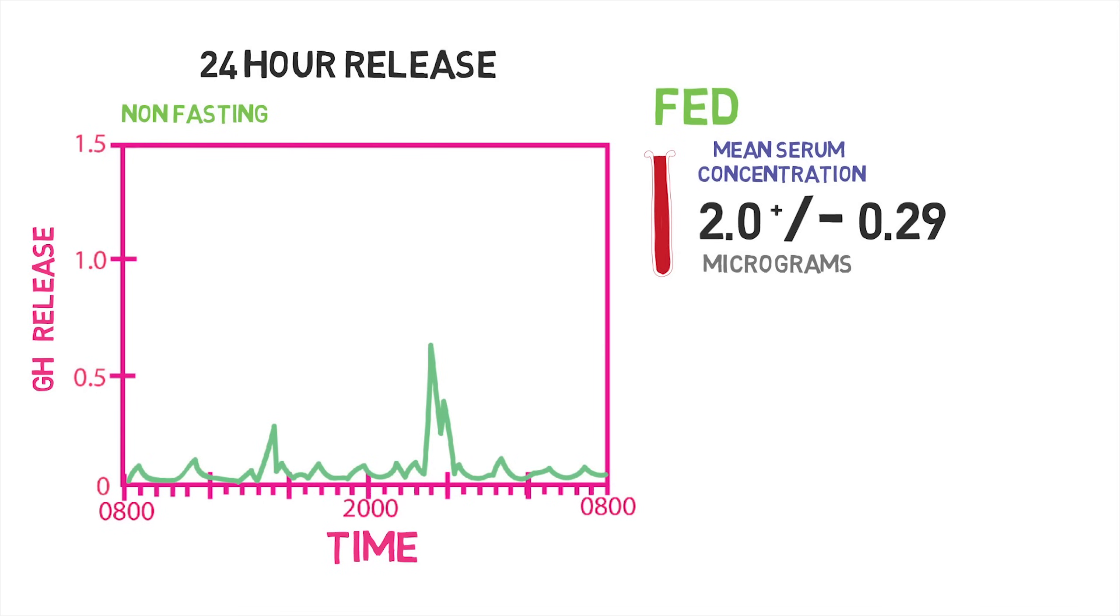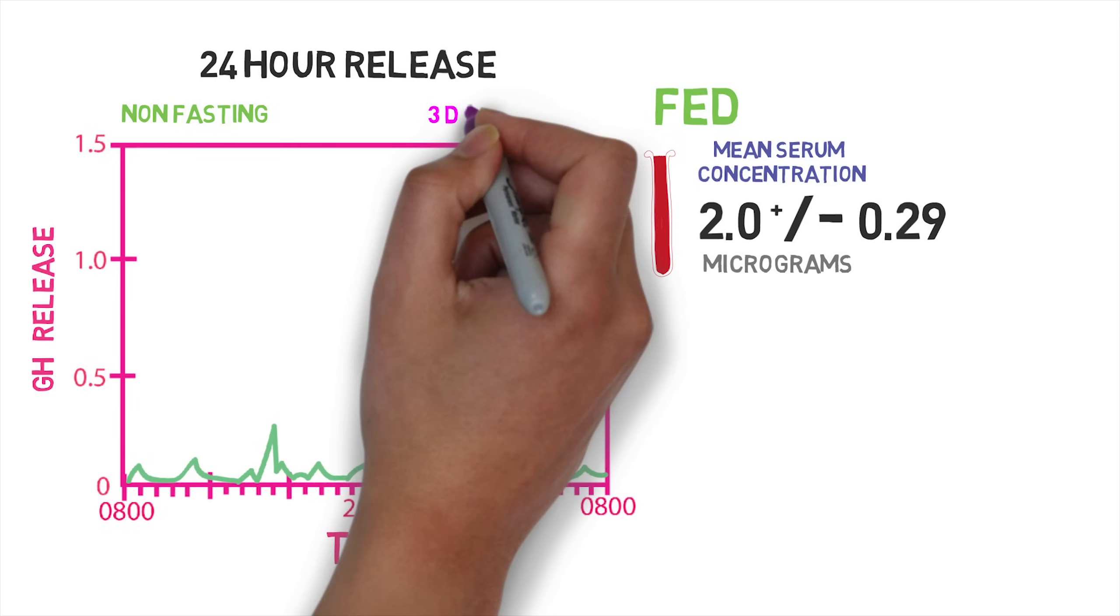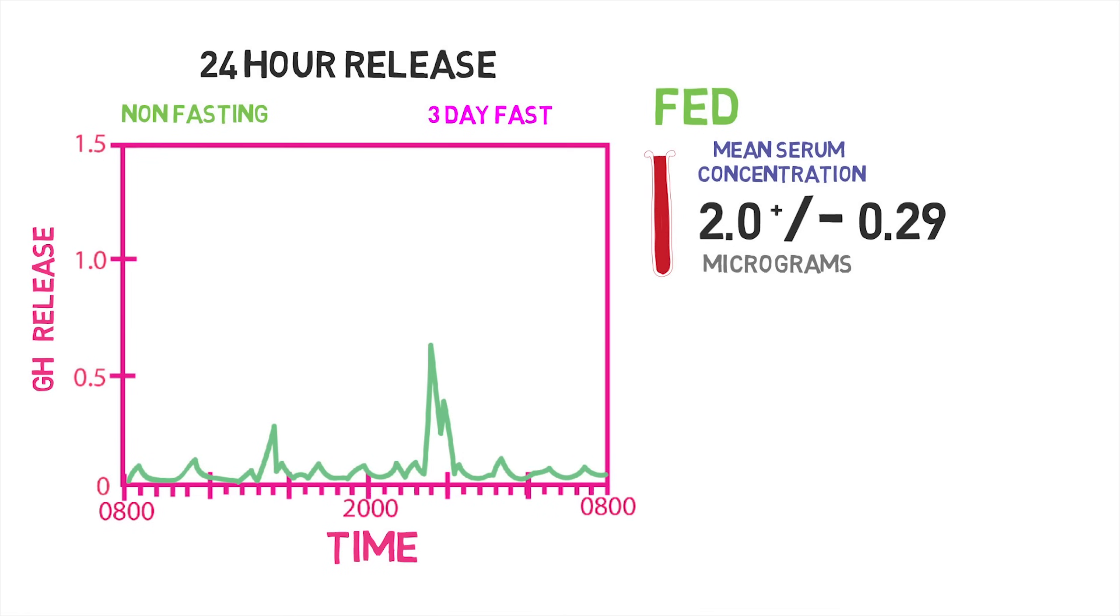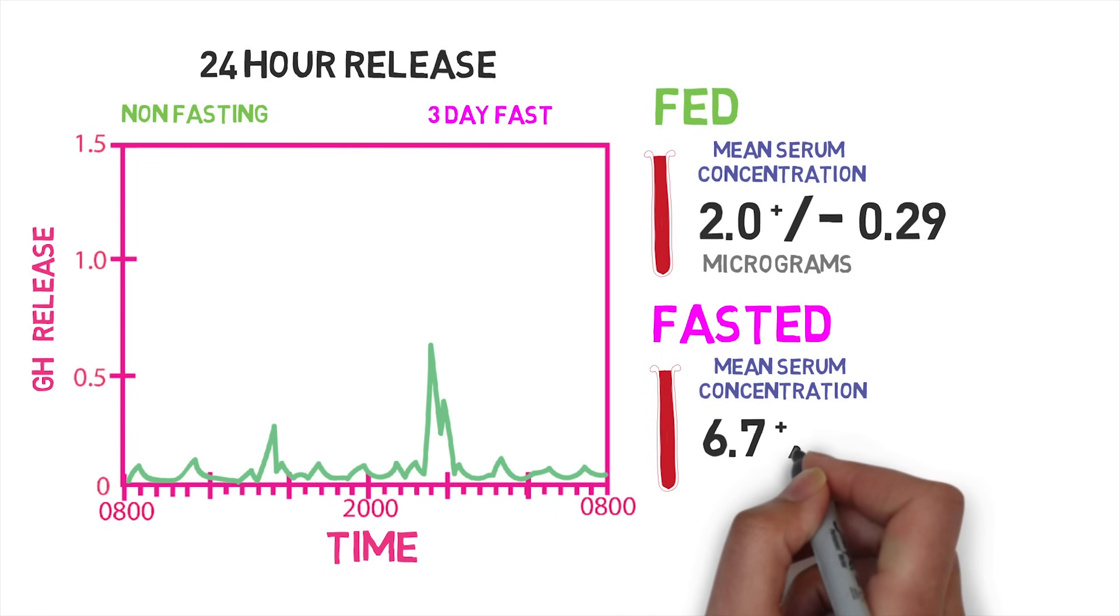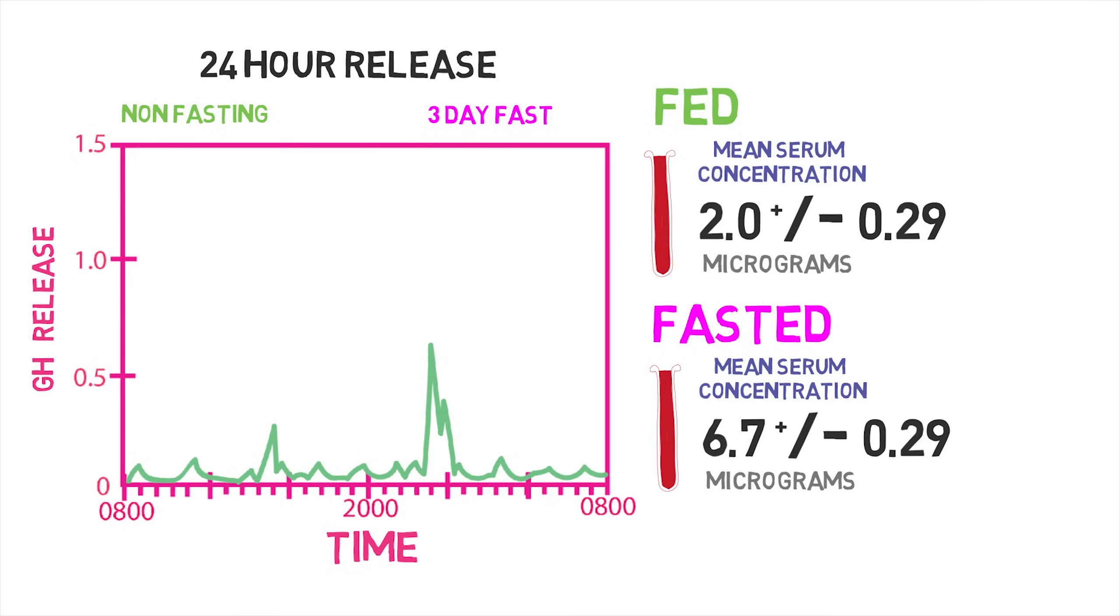Here's where it gets interesting. They then put the subjects on a three-day fast. After two days of fasting, they remeasured over the final 24-hour period of the fast, and the impact of the fasting was huge. Mean levels of growth hormone in the blood increased by three-fold, up to about 6.7 micrograms per liter. After a closer look, they found that the pituitary gland had kicked into overdrive. Not only did the number of blips of growth hormone release double, the average size of each blip increased as well.